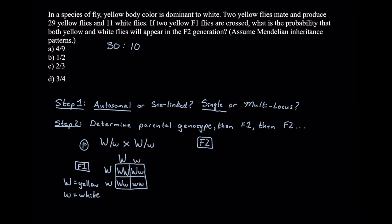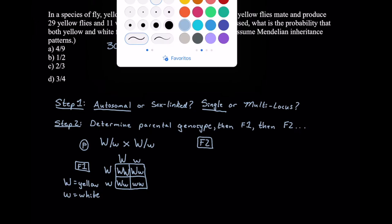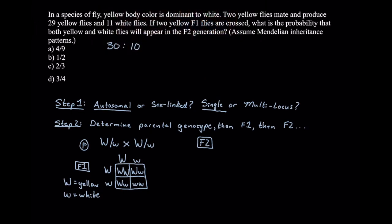The actual question asks: if two yellow flies are crossed, what is the probability that both yellow and white flies will appear in the F2 generation? One important thing to note is they're specifically asking if we choose two yellow flies, so we want to ignore the probability of one-fourth of getting the white fly from F1 progeny. We're only looking at progeny that will have yellow bodies.